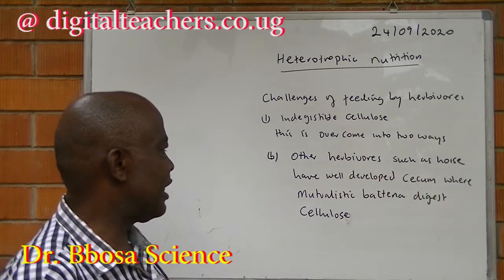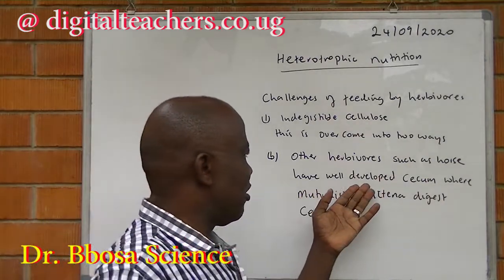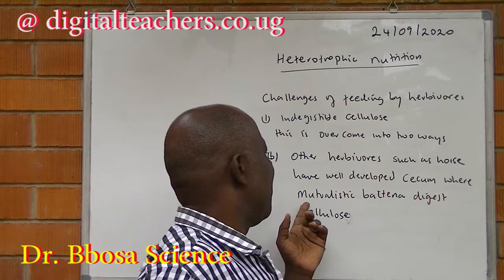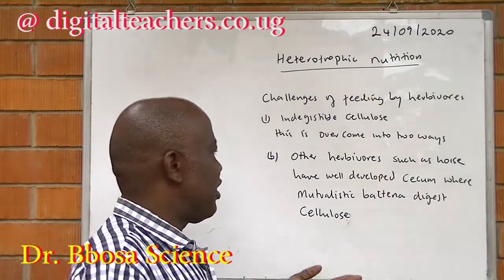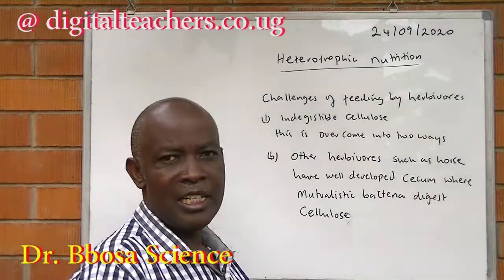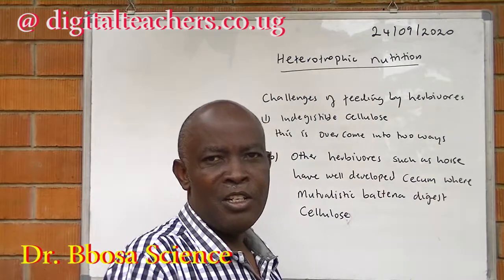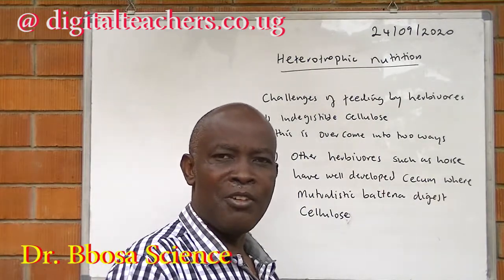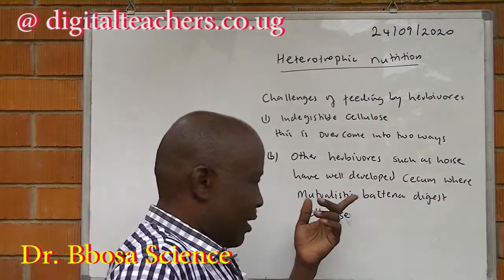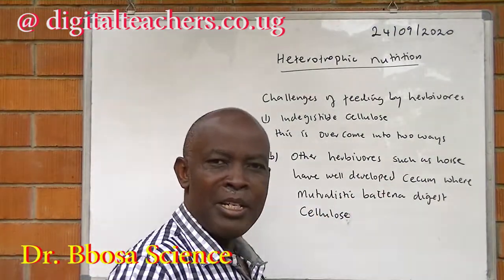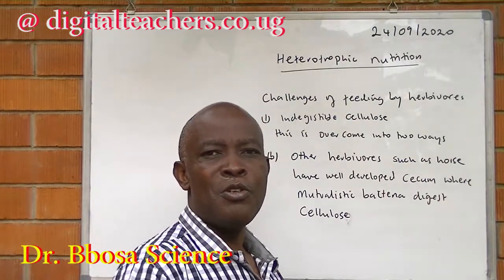Other herbivores, such as horse and rabbit, have a well-developed caecum containing mutualistic bacteria that digest cellulose. The important point is that the caecum occurs at the end of the small intestine, so absorption is not very effective. Animals like rabbits must feed on their faeces in order to obtain enough nutrients.